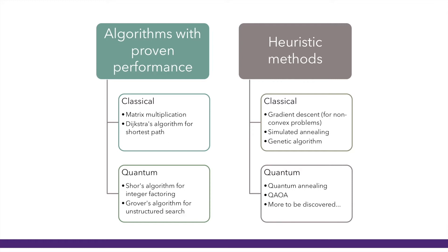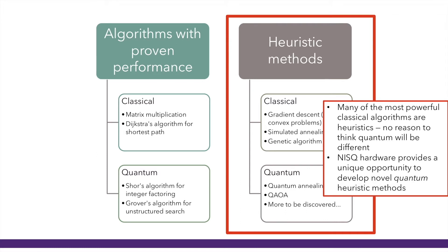Classically, there are many algorithms with proven performance, like matrix multiplication — it's always O(n³) and you get the correct answer — or Dijkstra's algorithm for shortest path. And quantumly, there are also algorithms with proven performance such as Shor's algorithm for integer factoring or Grover's algorithm for unstructured search. But some of the most powerful classical methods — the bleeding edge — are heuristics, for example gradient descent for non-convex problems, which is how most of machine learning works, or simulated annealing, or genetic algorithms.